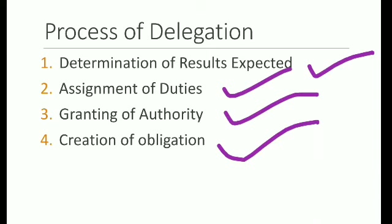So, determination of result expected means: the result expected from each position needs to be identified very properly at the initial stage, whenever you want to delegate your authority or some work. The authority should be delegated to a position as per the result expected from that position. The manager should ensure that the person has adequate ability to achieve the result expected. This step implies that results expected from each position have been identified properly.